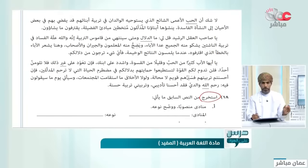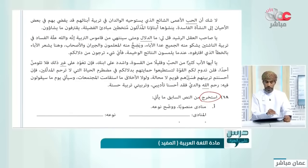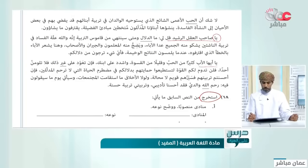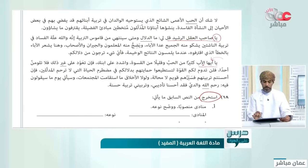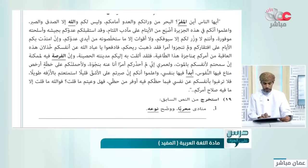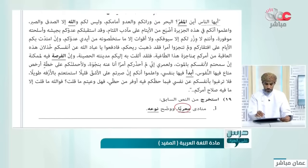أسئلة امتحانية: استخرج من النص السابق منادى منصوباً ووضح نوعه. في الاستخراج لا بد أن نجد الأداة. يا صاحب العقل الرشيد - الأداة 'يا'. يا أيها الأب الكثير من الحب وقليل من القسوة - هنا أتت 'أيها' إذن هذا مبني معرف بأل. الإجابة: 'صاحب' منادى منصوب نوعه 'صاحب العقل' مضاف.